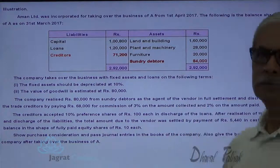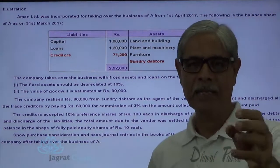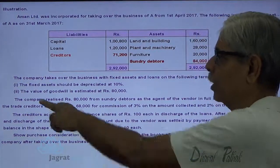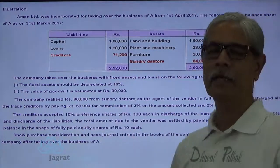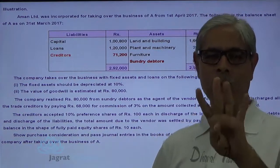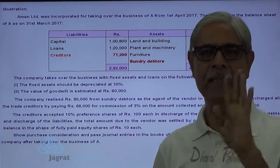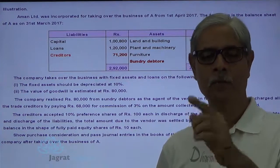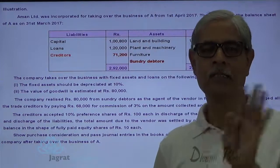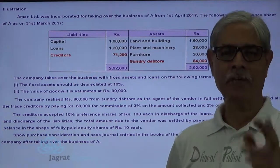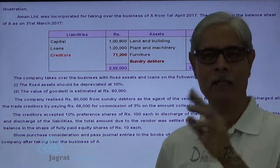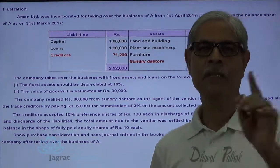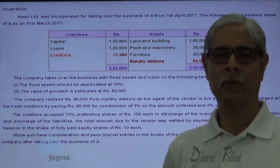The company has taken debtors of Rs. 84,000 for collection but could only collect Rs. 80,000. Rs. 4,000 could not be collected, so it is a bad debt. This bad debt is a loss — it is not a loss of the company but a loss of Mr. A. So, A's suspense account will be debited for that amount.